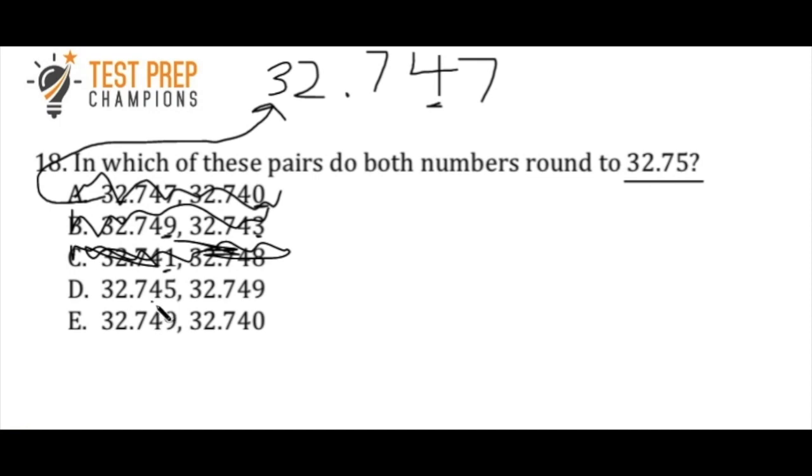In D here, again, we're going through this a little bit faster now. Hopefully, you're getting the point. Look at the 4. Look to the number directly to the right of it. Is it 5 or greater? Yes. So this 32.745 is going to round up to 32.75.